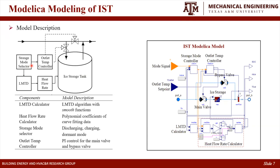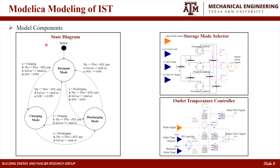The next slide shows the details of some components. For example, here's the state diagram showing how the mode changes among the dormant mode, charging mode, and discharge mode. And also, there's the outlet temperature controller, and this figure shows the implementation of this controller in the terminal interface.